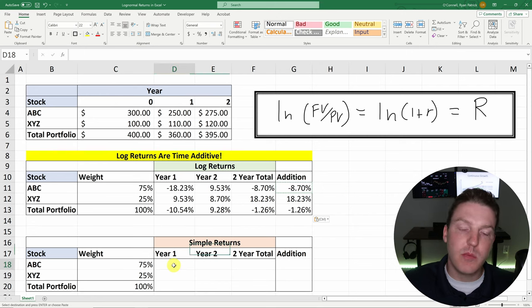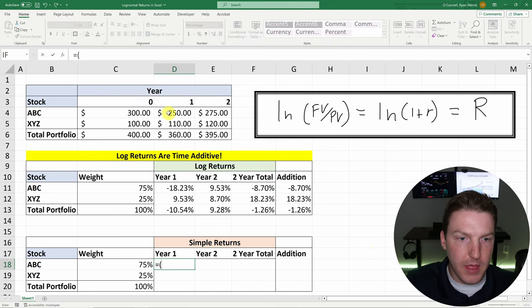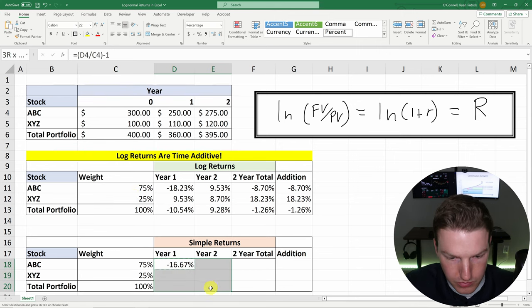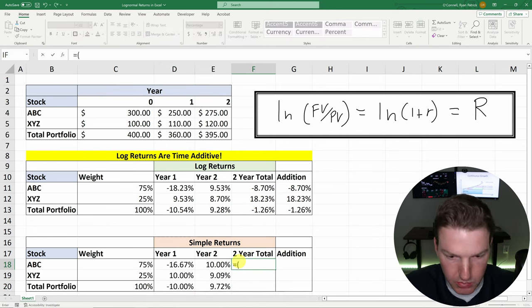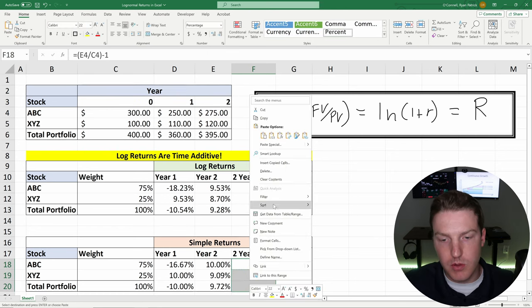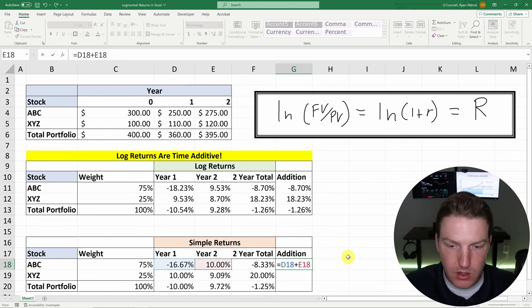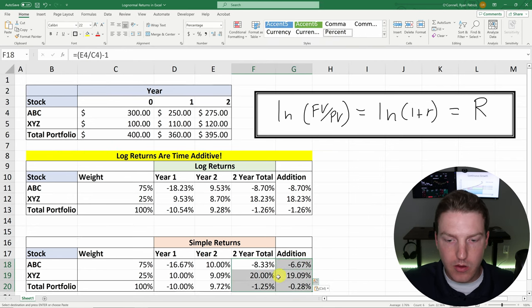And so if we try the same thing with simple returns, we might find a different scenario. So a simple return is just equal to that future price divided by the present value minus one. So we don't take LN in this scenario. Let's take control C. Let's paste these with a right click. And then now we can find the two year total using a simple return methodology by taking that value in year two divided by that value at the beginning and then subtracting one, hit enter, control C. And I will once again paste formulas. And so now let's try to do the addition trick with simple return. So equals this plus this. And we'll see that they do not match. We can't add these across time. None of them actually match.